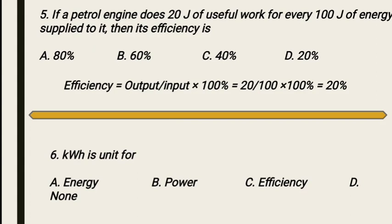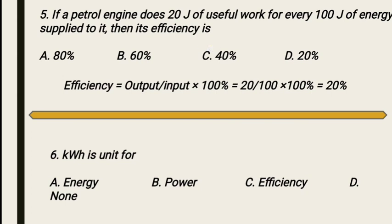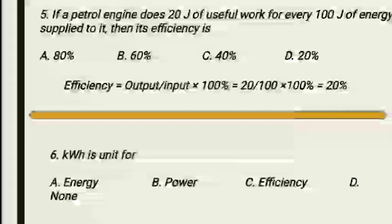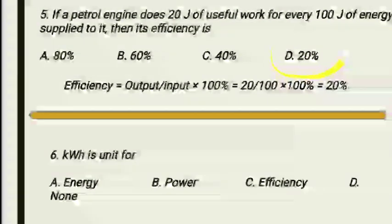The fifth MCQ: a petrol engine does 20 joules of useful work for every 100 joules of energy supplied to it. What is its efficiency? By definition, efficiency equals output divided by input multiplied by 100%. Output is 20 and input is 100. So efficiency equals 20 divided by 100 times 100%, which gives 20%. The correct option is 20%, Option D.